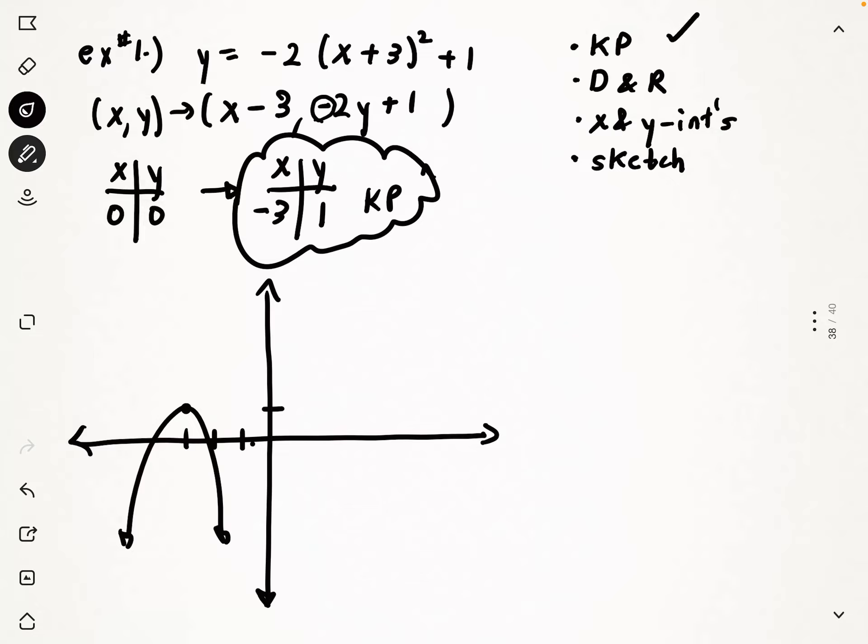The domain and range not too bad. Domains for parabolas are always real numbers, all real numbers. It goes infinitely to the left and right, so that's never going to change. The range, however, is going to change. So you can see in this particular example that the range starts at a minimum y value of negative infinity, goes all the way down to negative infinity, but has a maximum y value at positive one.